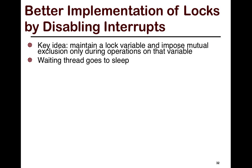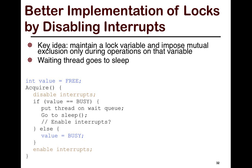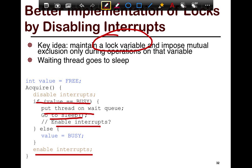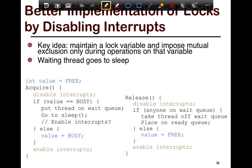A better implementation of locks using interrupt disabling maintains a lock variable. You only need to disable interrupts when acquiring and releasing the lock — that is, when you manipulate the variable. If the value is busy, put the thread on a wait queue and go to sleep, then enable interrupts. Otherwise enable interrupts regardless. When you release the lock, you also disable interrupts first. This ensures the operation of the lock variable itself is atomic, and if the lock operation is atomic, we know how to construct atomic sections with mutual exclusion. This removes the need for a hardware lock instruction.